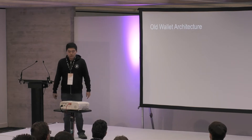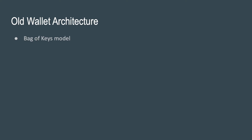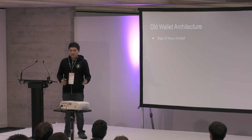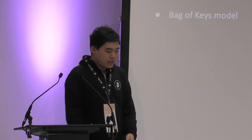So what's the old wallet architecture, at least in Bitcoin Core? Well, we have what I call the bag of keys model. The wallet just has a bunch of keys and it does a bunch of things with those keys. Everything is centered around those keys, and a lot of wallets actually follow the same thing, just with a little bit of variation of what they produce with those keys.